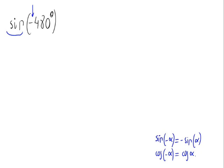But let me remind you that the cosinus of minus alpha is the same as the cosinus of alpha. So, in our case, let's get the minus sign out of the parenthesis. That would be minus the sinus of 480 degrees.